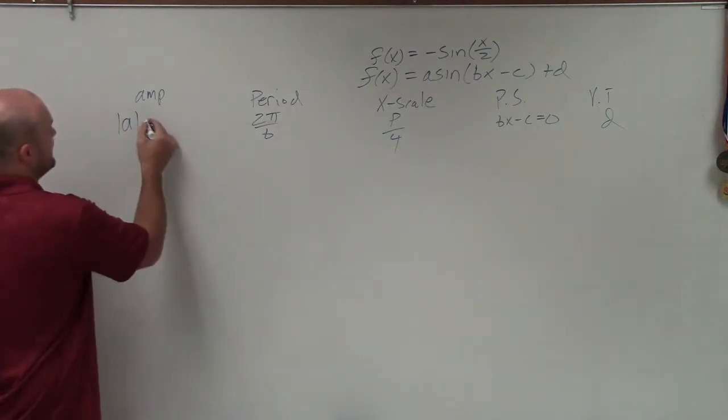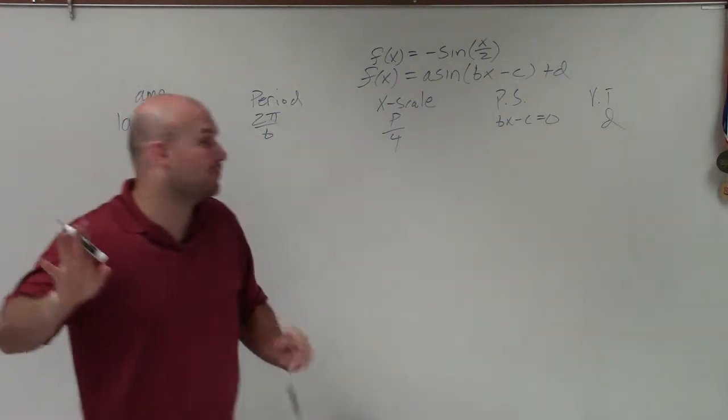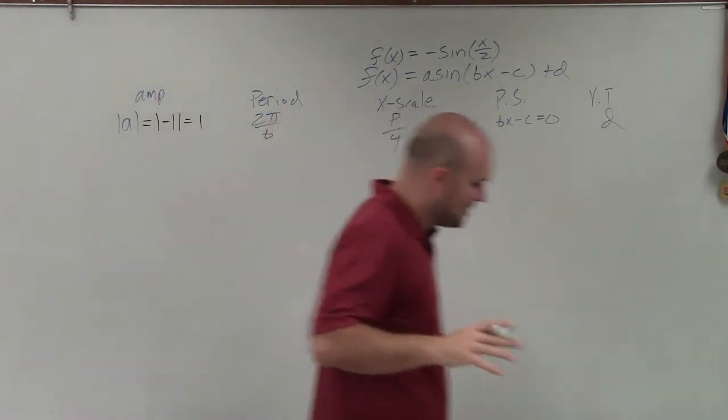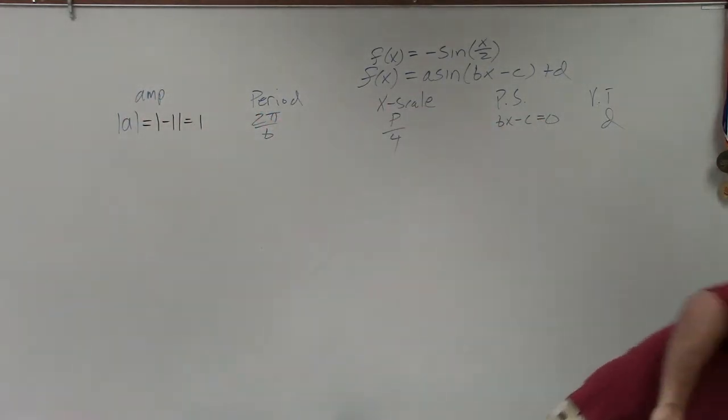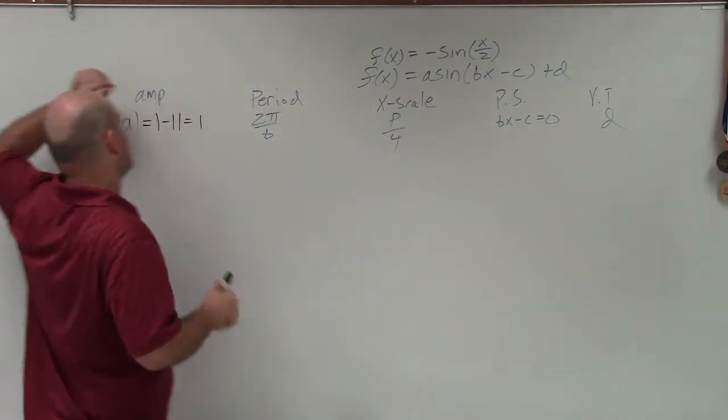Well, our a, you can see, is absolute value of negative 1, which is just 1. But something that's very, very important. Because I didn't talk about, a, yes, gives us our amplitude. But a also determines if we have a reflection over the x-axis.